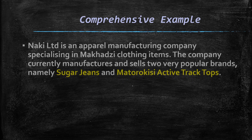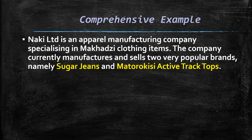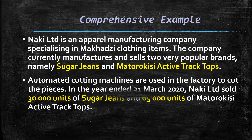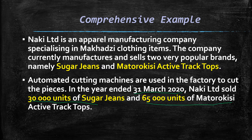This is our comprehensive example — I'd advise you have a pen and paper with you. Nike Ltd is an apparel manufacturing company specializing in Maturikisi clothing items. The company currently manufactures and sells two popular brands: Sugar Jeans and Maturikisi Active Tops. Automated cutting machines are used in the factory to cut pieces. In the year ended 31 March 2020, Nike sold 30,000 units of Sugar Jeans and 65,000 units of Maturikisi Active Tops.